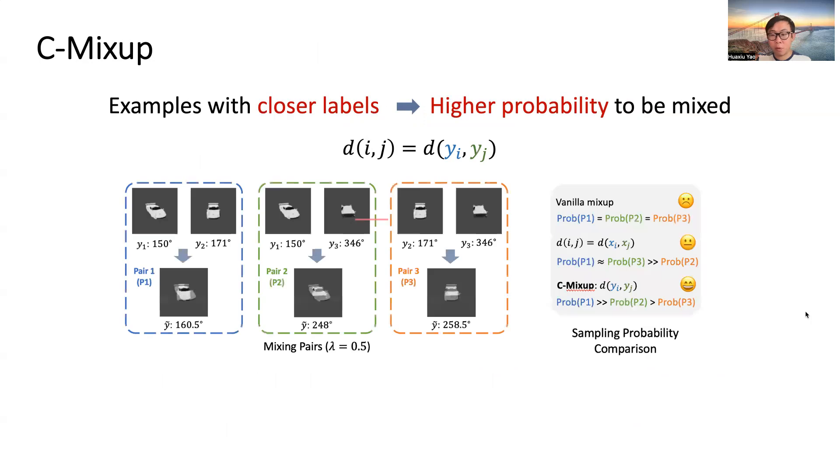In C-Mixup, we instead assign higher probability to examples with closer labels. It means D IJ equals D YI YJ. Let's recap the pose regulation task. Here, compared to vanilla Mixup and feature-based distance metric, C-Mixup can produce much more reasonable pairs, where the sampling probability of pair 1 is much higher than the other two pairs.